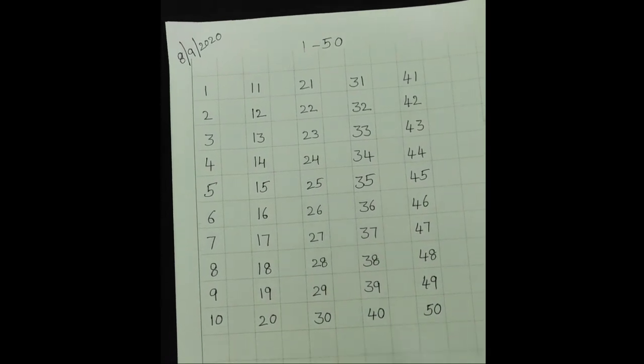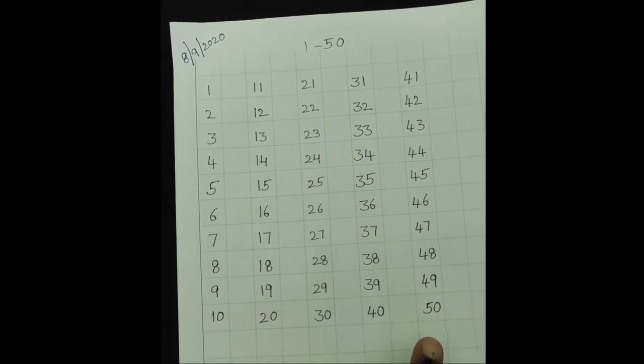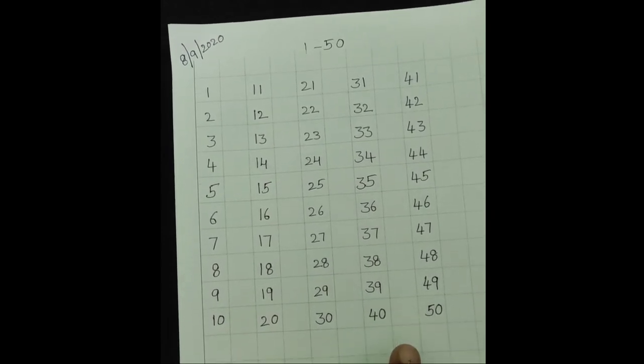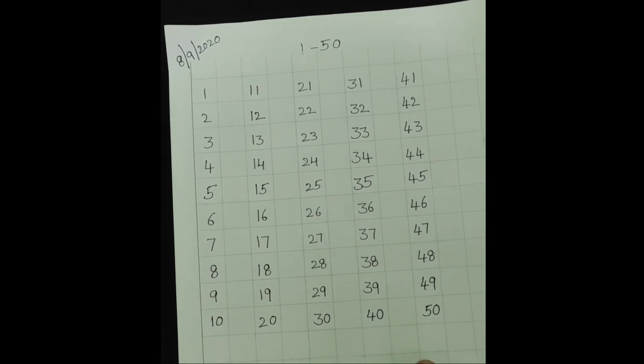In square rule book, write down 2 times 1 to 50 numbers. Say and write children. Good children, clap your hands. Bye children.